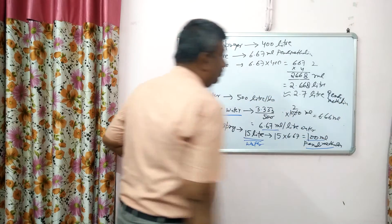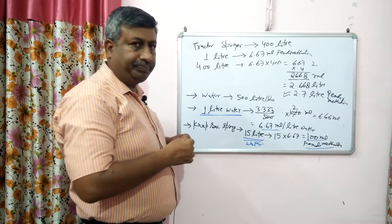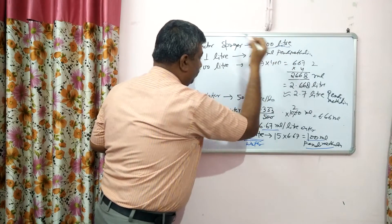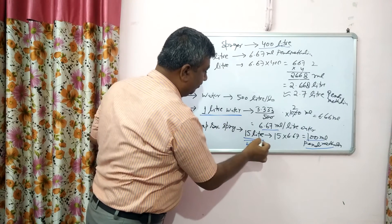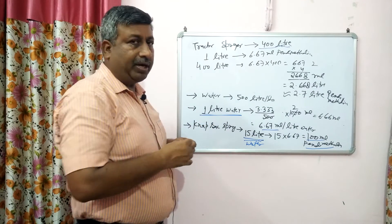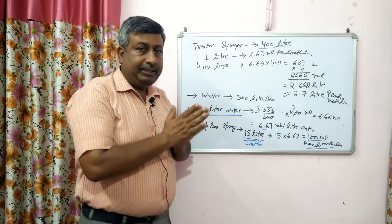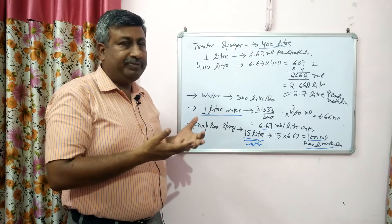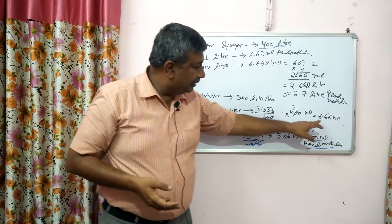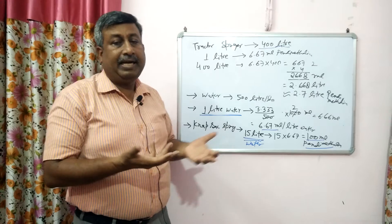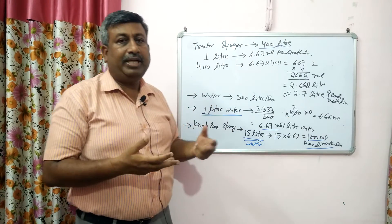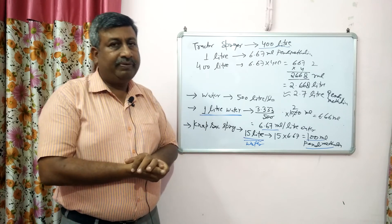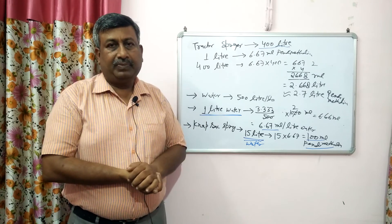This is the calculation method. For 100 liters or 200 liters, you can easily calculate similarly. For example, for 10 liters of water: 6.67 ml multiplied by 10 = 66.7 ml. This is how we calculate the required amount of pendimethalin for any volume of water. Thank you very much.